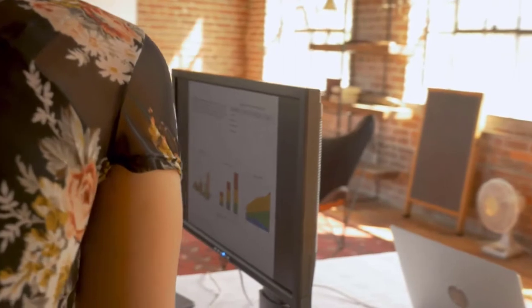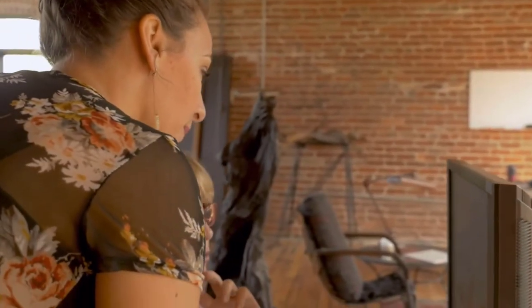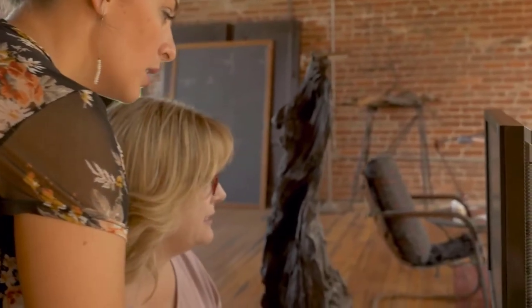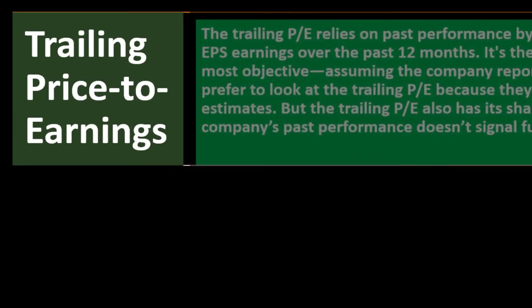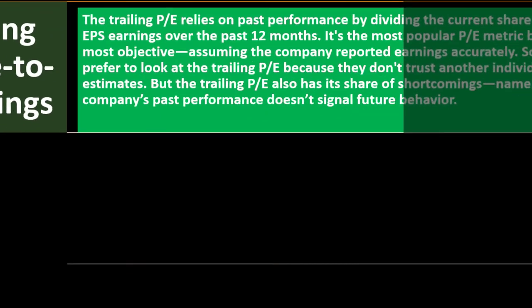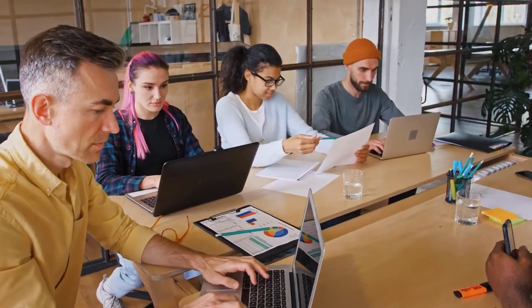These tools are all estimates — we're painting a picture with statistical tools rather than hard-line rules. This can be difficult for people trained in accounting who expect definitive answers. When using statistics to predict the future, you want to gather as much data as possible, looking at it from multiple angles to form your best assumptions. The trailing PE relies on past performance by dividing the current share price by total earnings per share over the past 12 months. It's the most popular PE metric because it's the most objective, assuming the company reports earnings accurately.